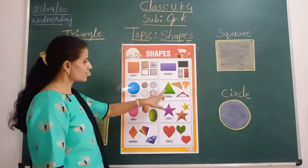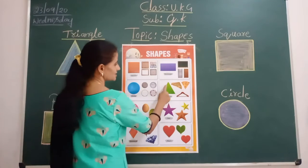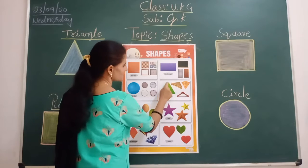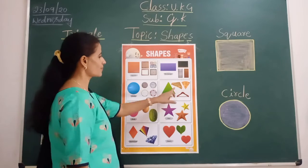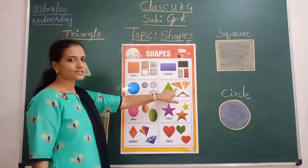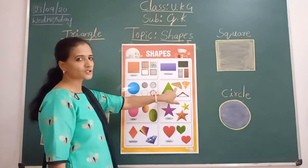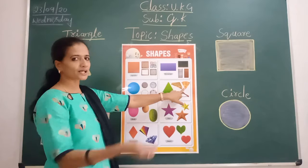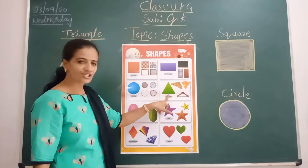Okay children, see here — green color. This is triangle. So, what is there in triangle shape? See here: sandwich. We will eat snacks children. Sandwich — this is also triangle shape. Pizza — so we will cut, we will make triangle shape.